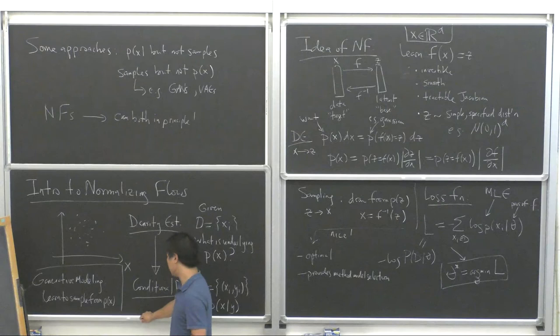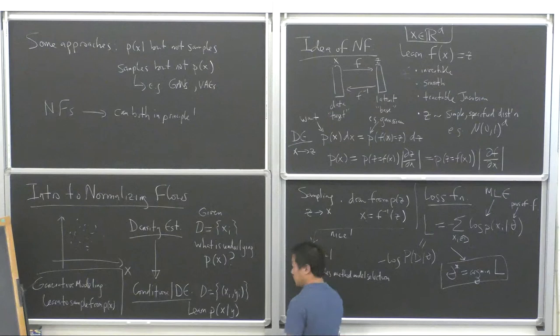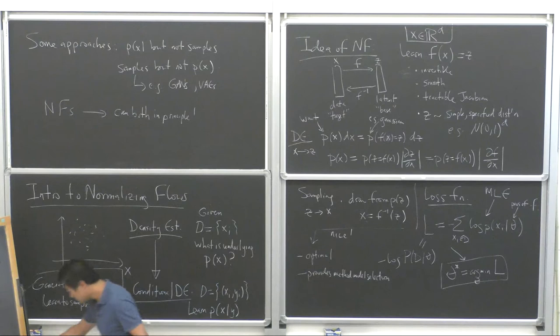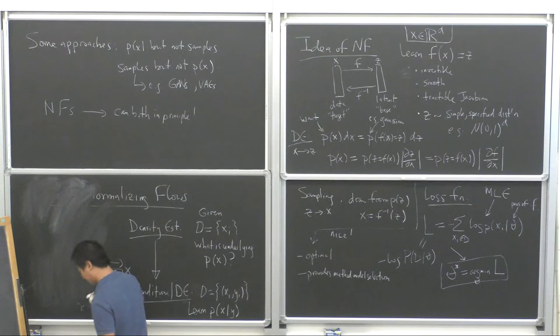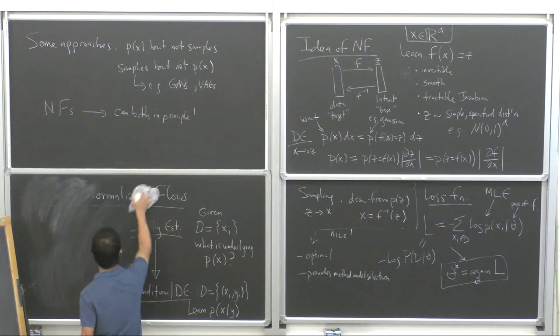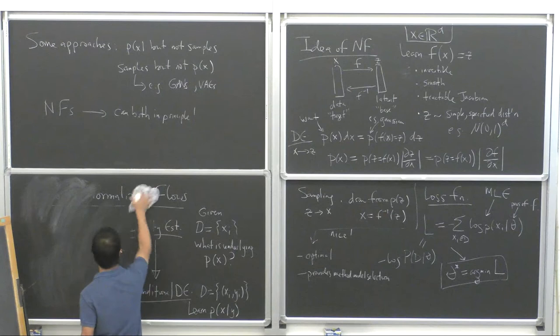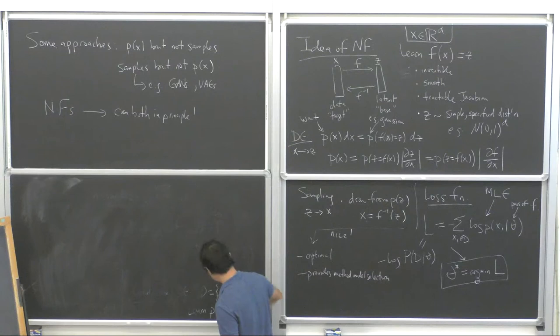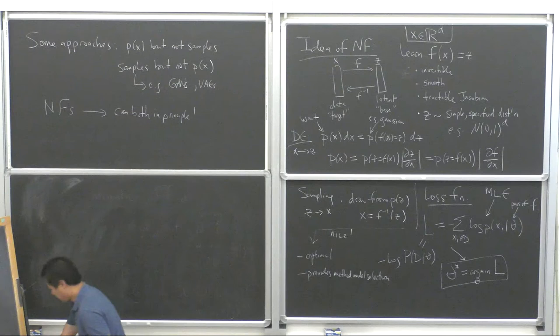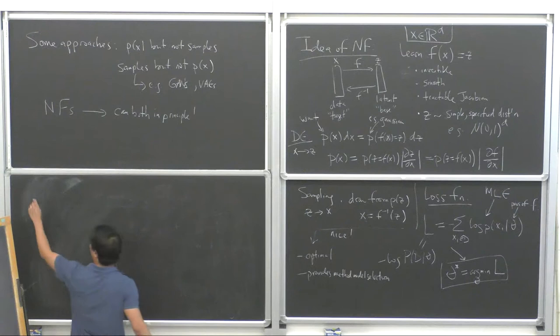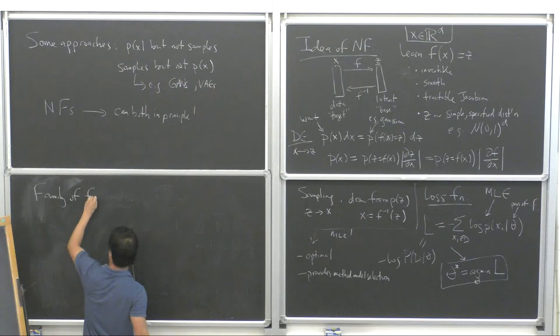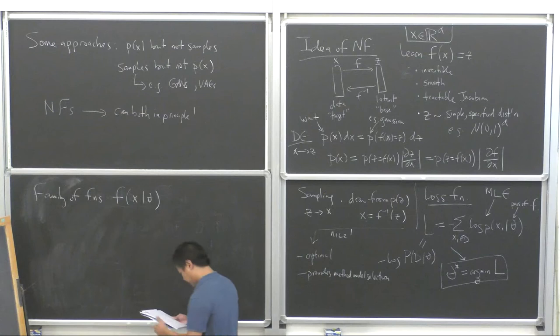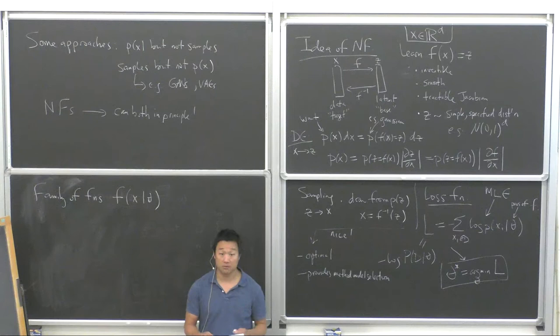So that's how we train the normalizing flows. Now let me describe the family of functions for the flow. We want it to be as expressive as possible while maintaining those conditions of invertibility, smoothness, and tractable Jacobian.